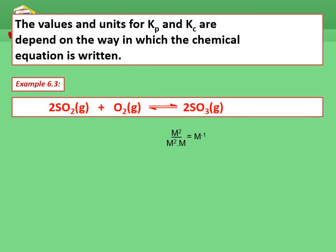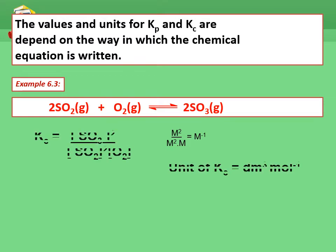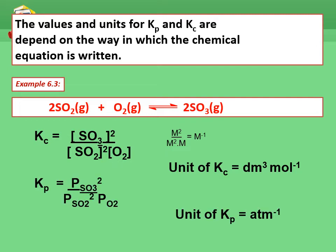The values and units for Kp and Kc depend on the way in which the chemical equation is written. For example, equation 6.3: 2SO2 plus O2 becomes 2SO3. The Kc is concentration of SO3 to the power of 2, divided by concentration of SO2 to the power of 2, multiplied by concentration of O2. The unit will be M² over M² times M, which simplifies to per molar, or dm³ per mol. The Kp expression is the partial pressure of SO3 to the power of 2, divided by the partial pressure of SO2 to the power of 2, times partial pressure of O2, and the unit of Kp is per atm.